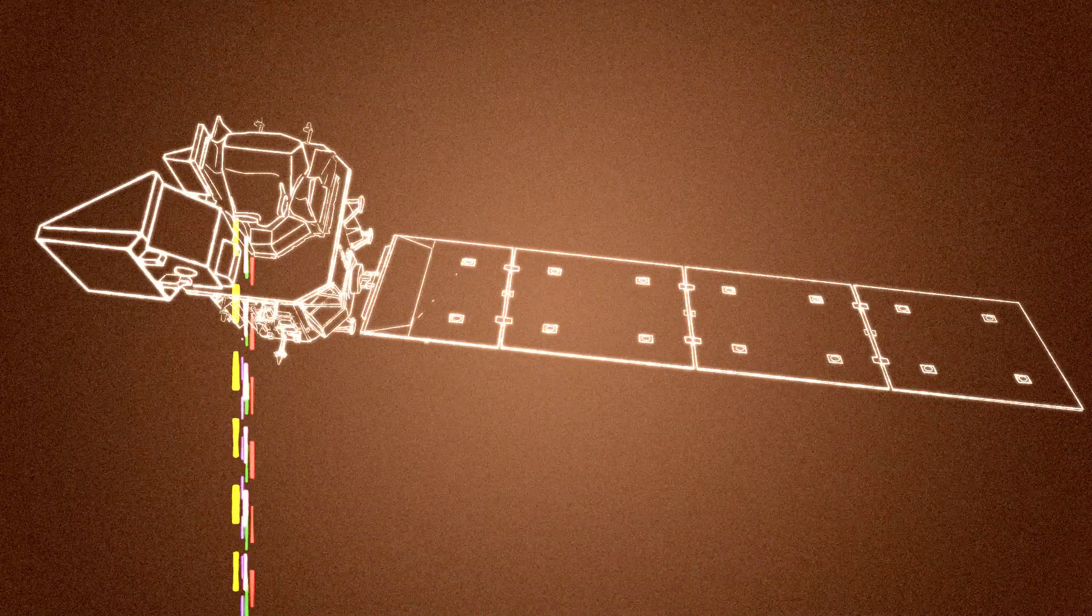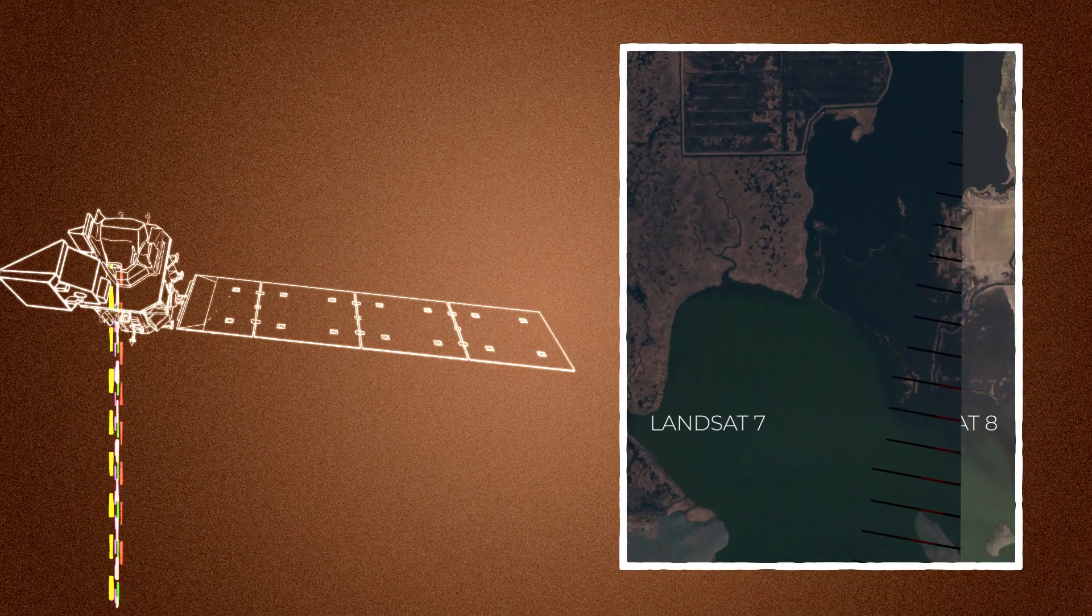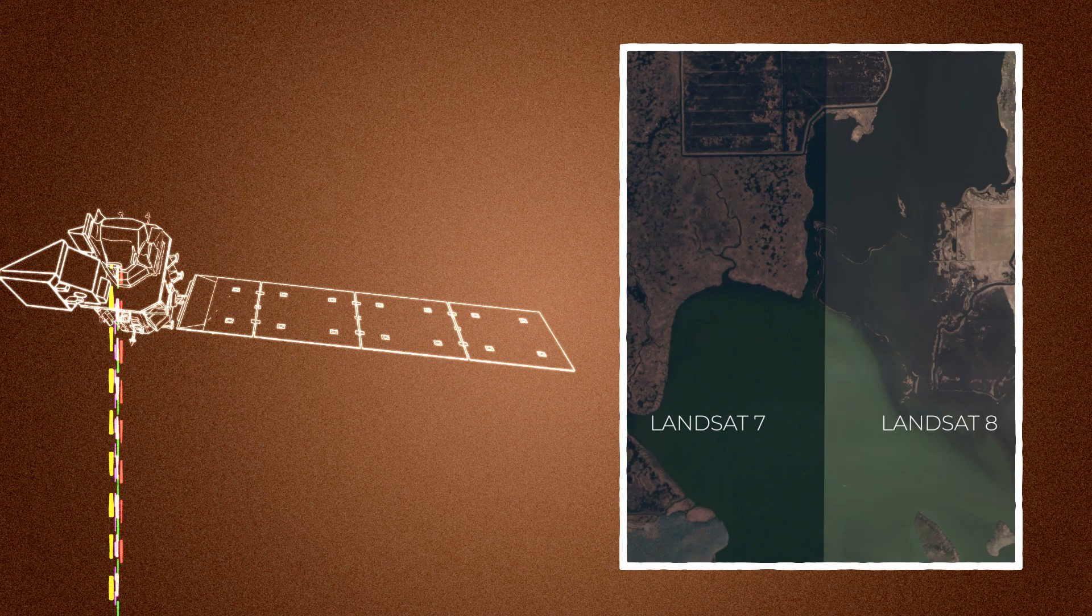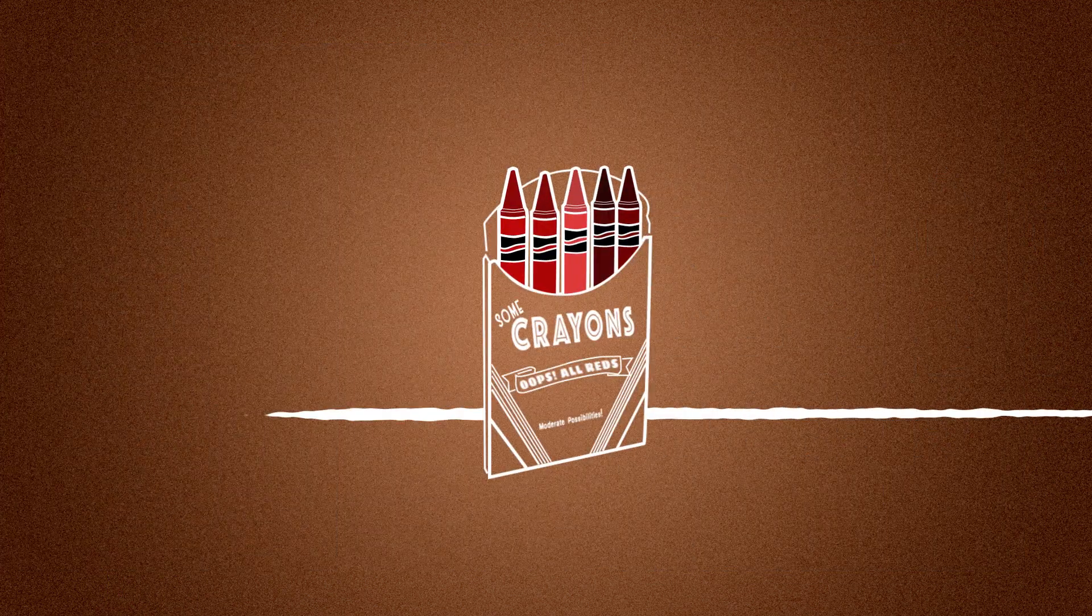Landsat collects light. How intense that light is tells us about what's on the ground. You can think of intensity like shades of a different color.